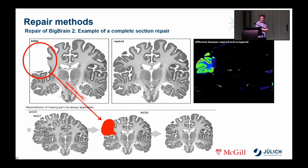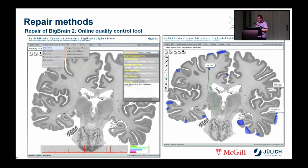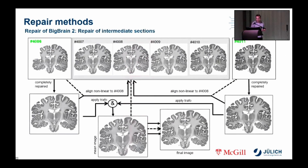Quality control is a very important component in this complete framework. In our experience, every section and every processing step must be visually checked to ensure that all processing steps have led to the desired result. For this purpose we now use an online tool that allows simple and therefore quick manual rating of the results achieved, shown here on the left side. In the latest version, shown on the right side, markings in the form of dot markers as well as marking of larger areas are now supported. We expect this to make repairs even more efficient, as it will be easier and faster to mark areas to be moved manually.